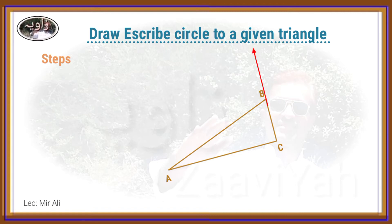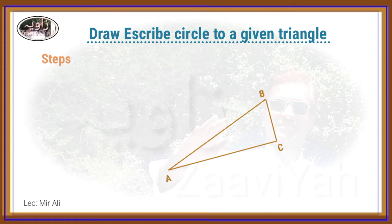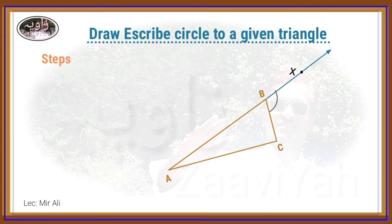Extend the sides. Given the triangle, the circle is joined. Extend the two sides. Mark point X on side AB and extend; mark point Z on side AC and extend.